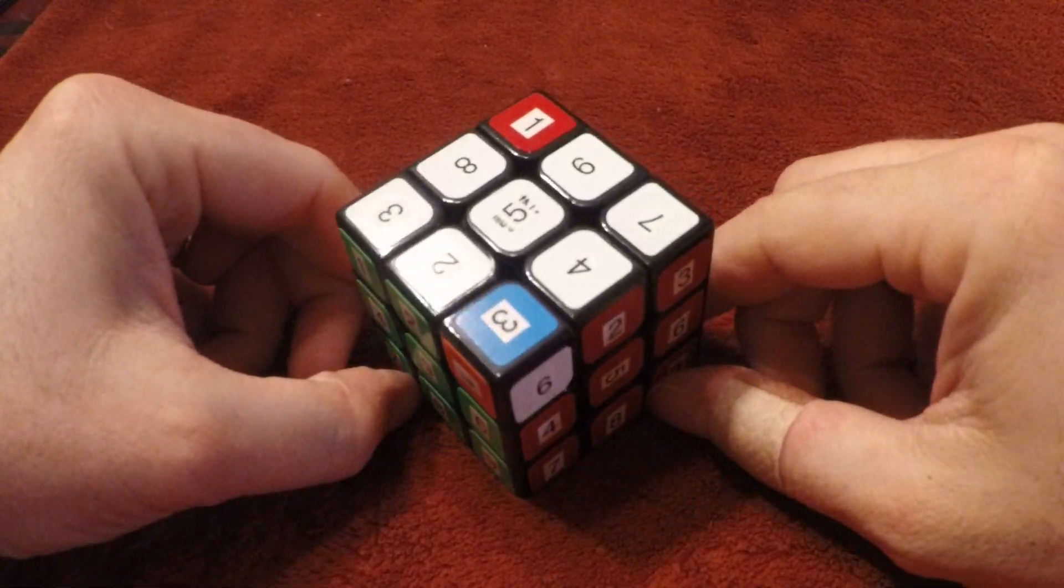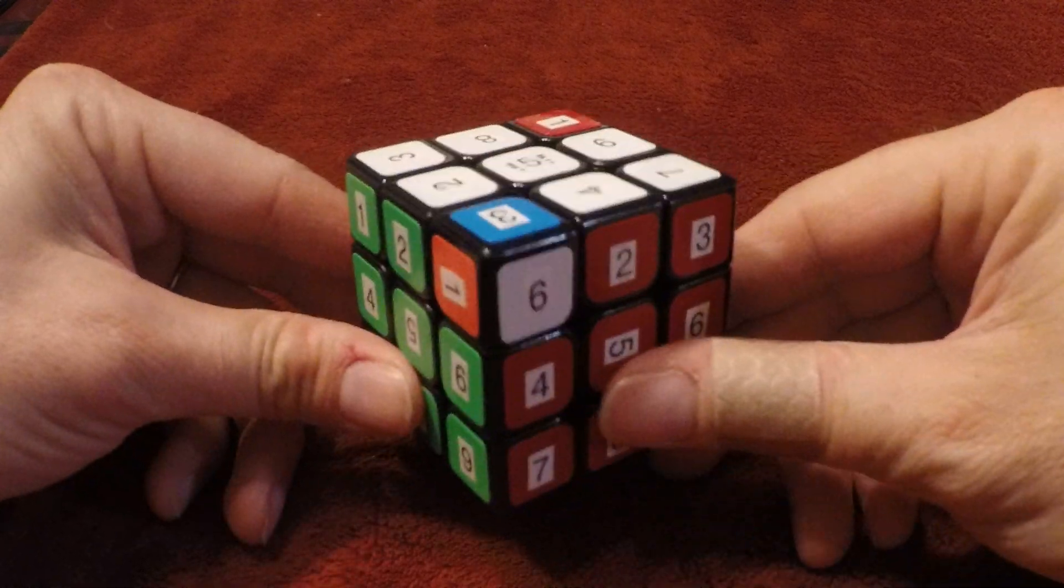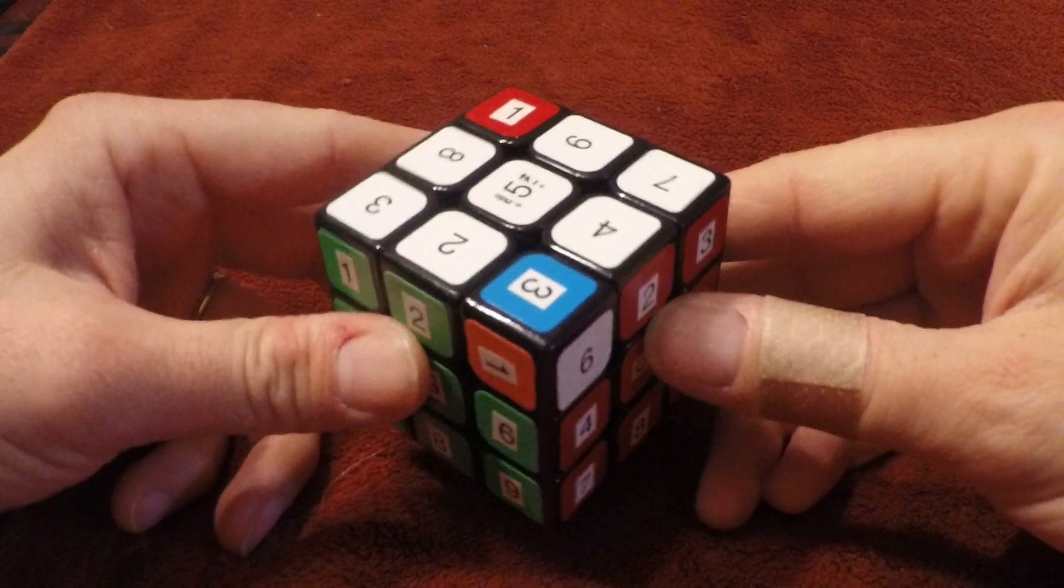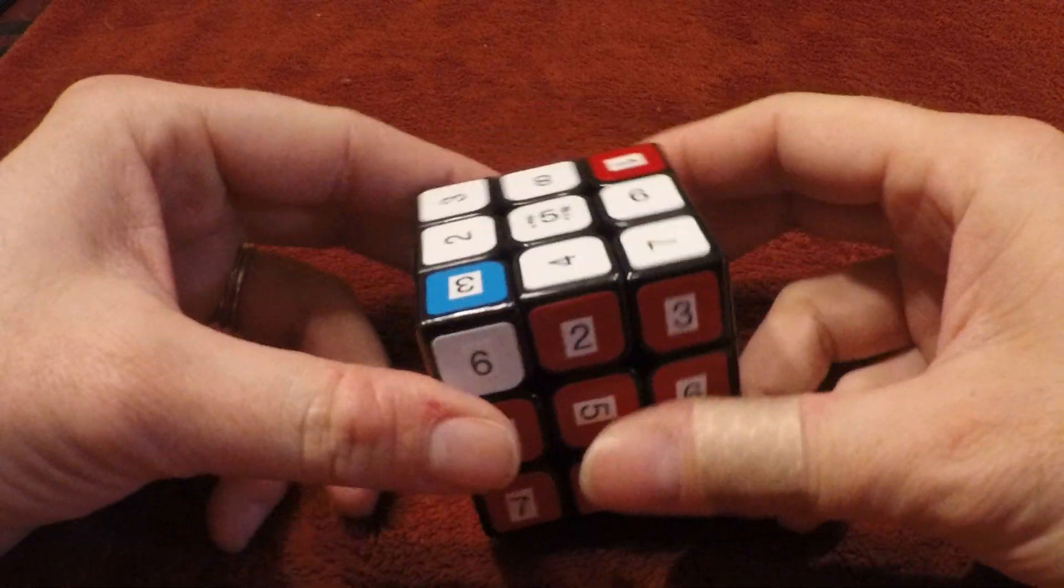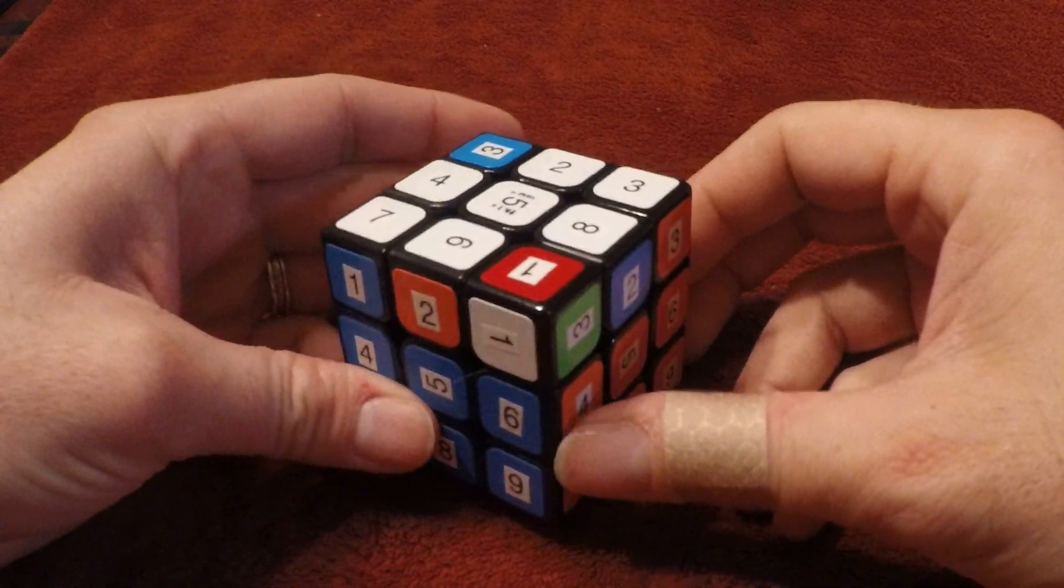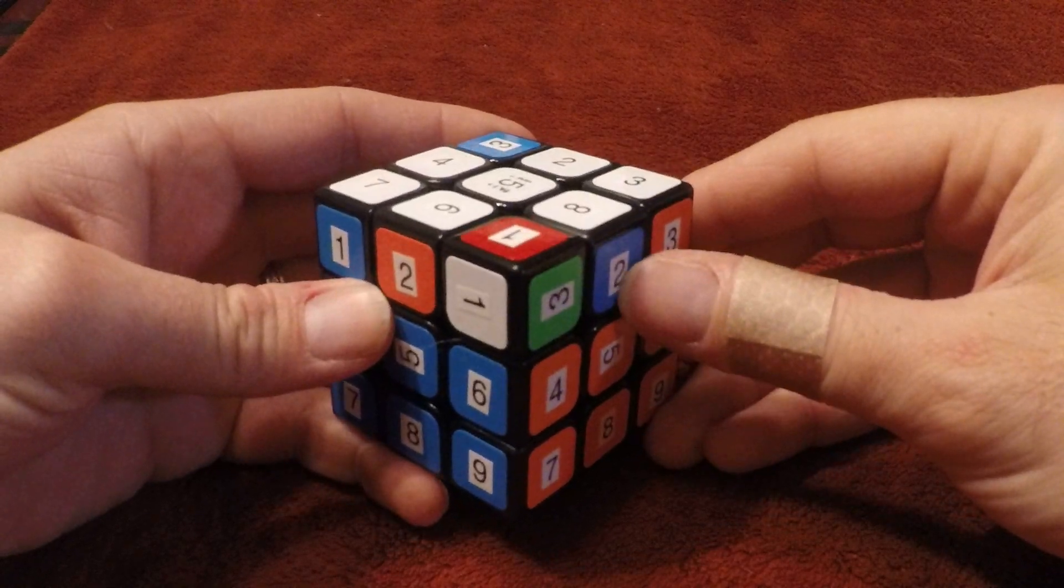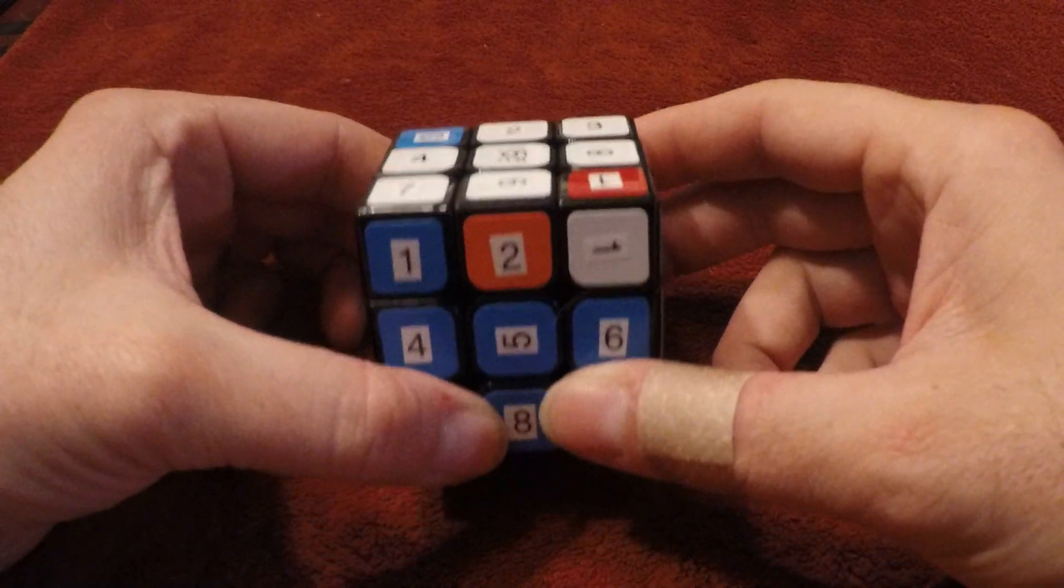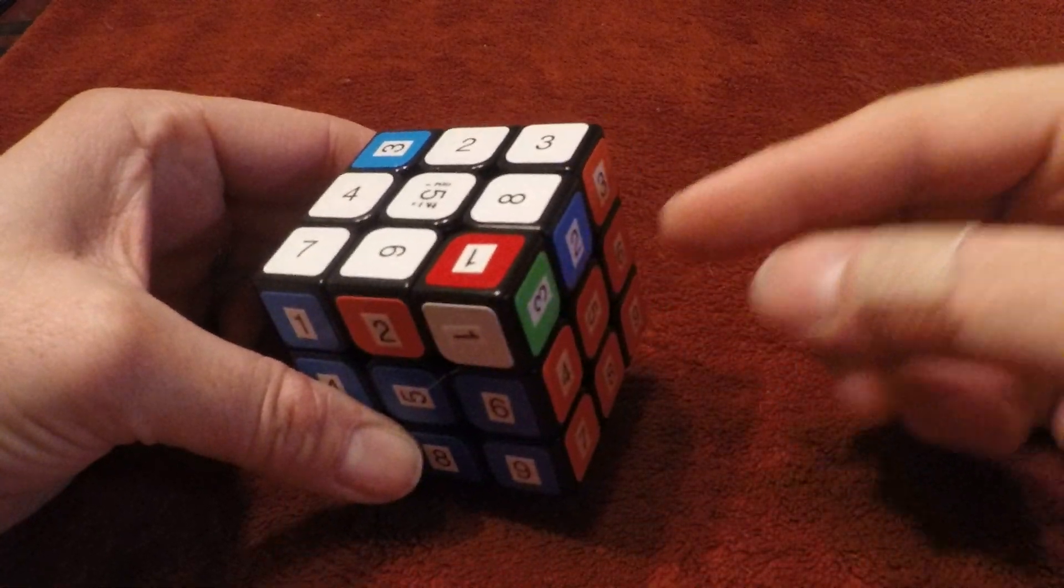Layer 3, aligning the cross. When you have this scenario where your correct edges are at a right angle to each other, and the incorrect edges are at a right angle to each other, you want to hold the cube so that your incorrect edges face towards you and to the right.